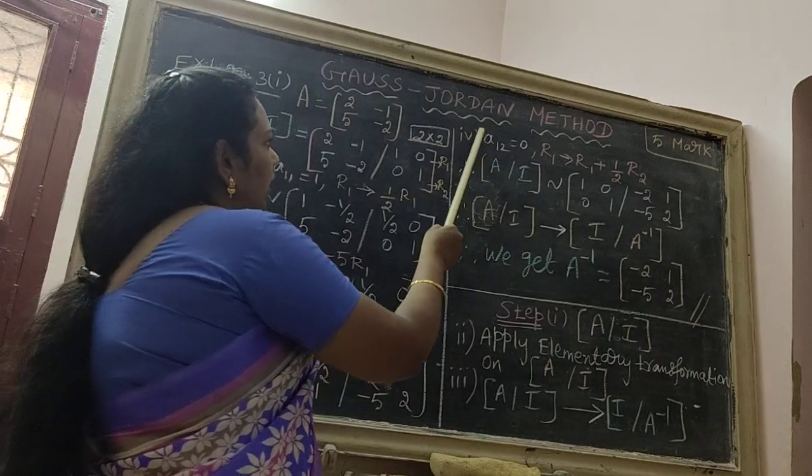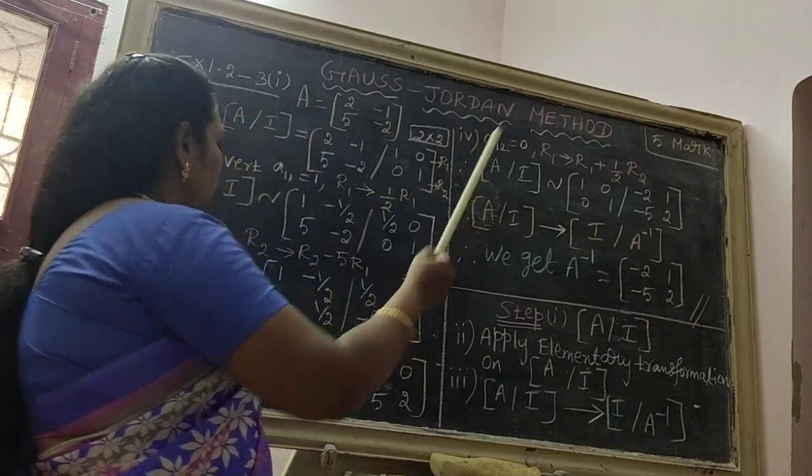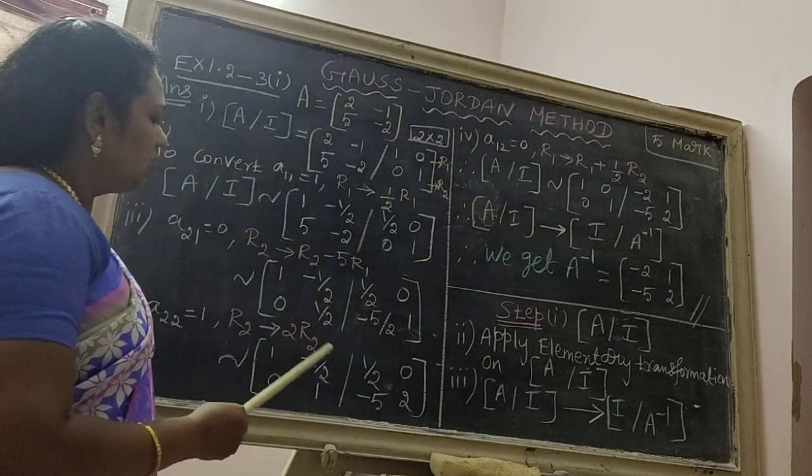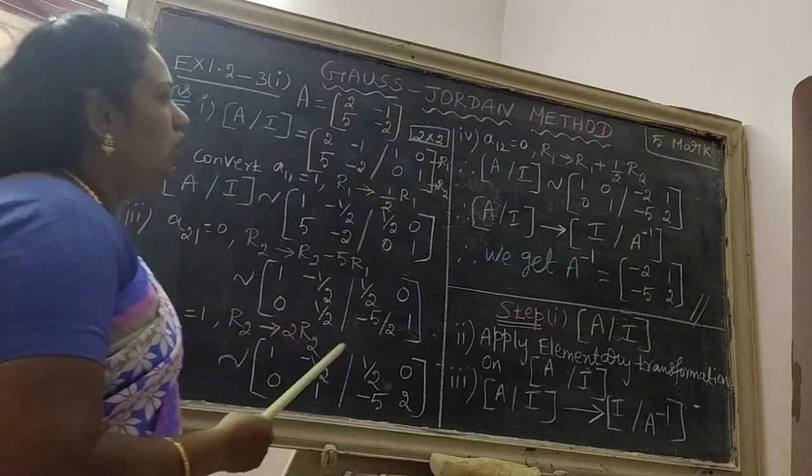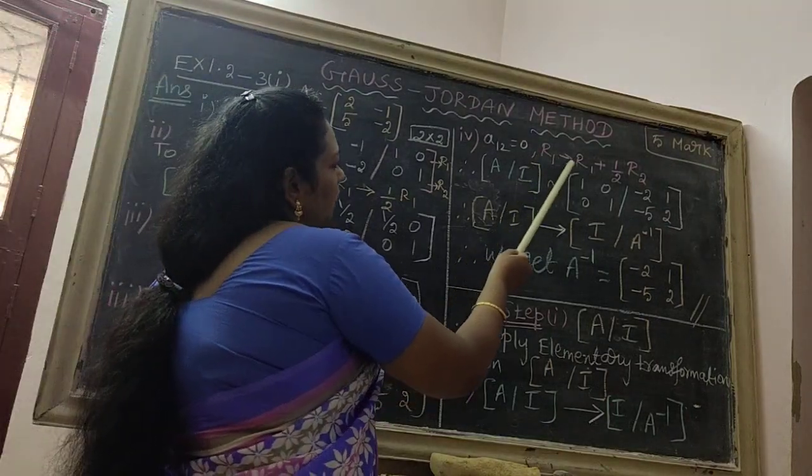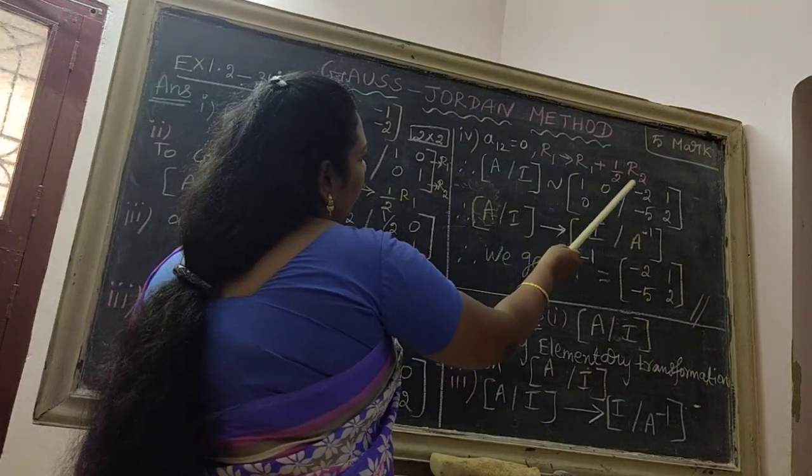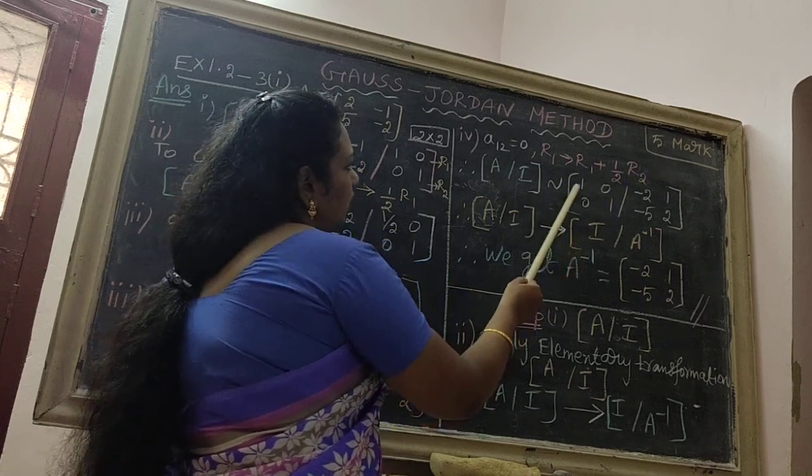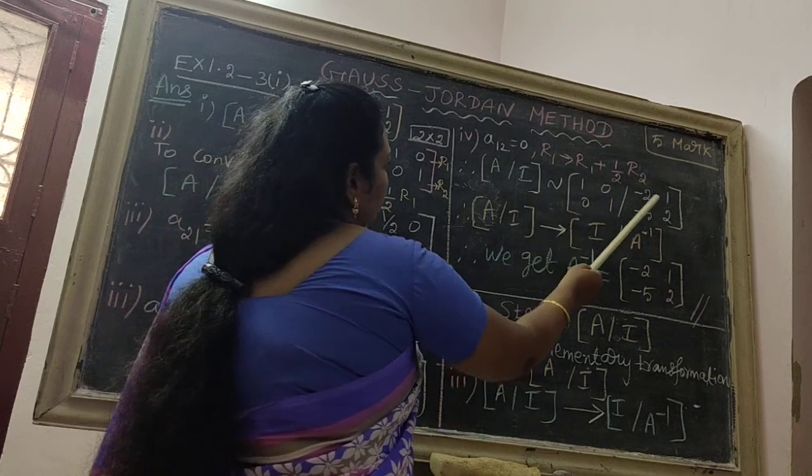Next step, to convert A12 equal to 0. A12, the value is here minus 1 by 2. Therefore R1 implies R1 plus 1 by 2 R2. Therefore we get the answer 1, 0, minus 2, 1.